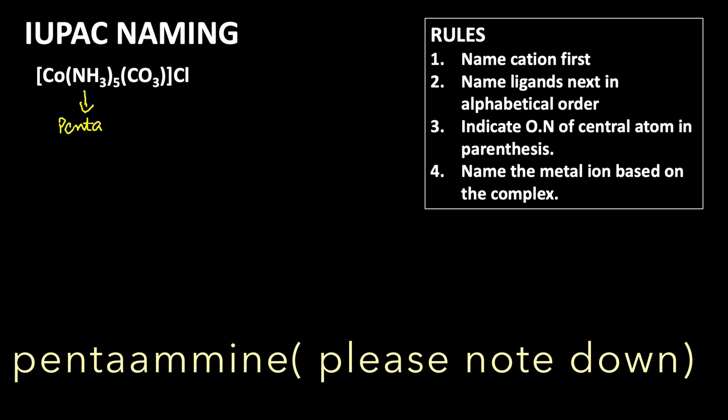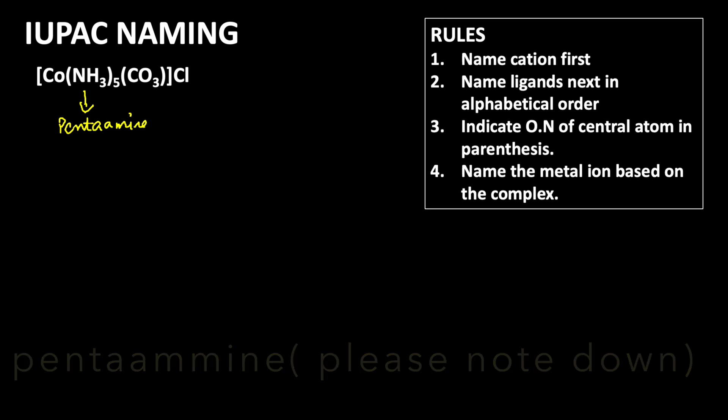Penta shows that there are five NH3 groups present, then carbonate. Because it is an anionic ligand, it ends with -o. Then Cl is the counter ion.